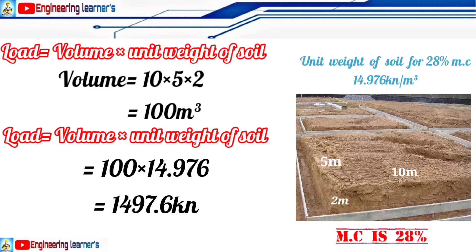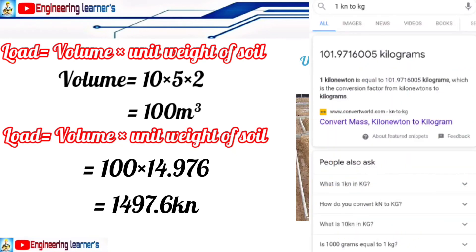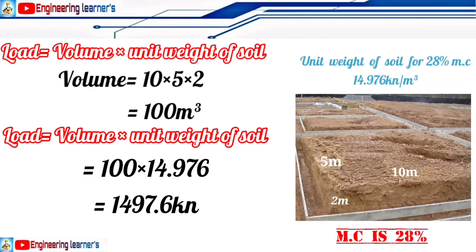If you are interested in finding it in kg, you just simply... we know that one kilonewton is equal to 101.97, so just simply 1497.6 kilonewton if we multiply it to 101.97, you will get the answer in kg.